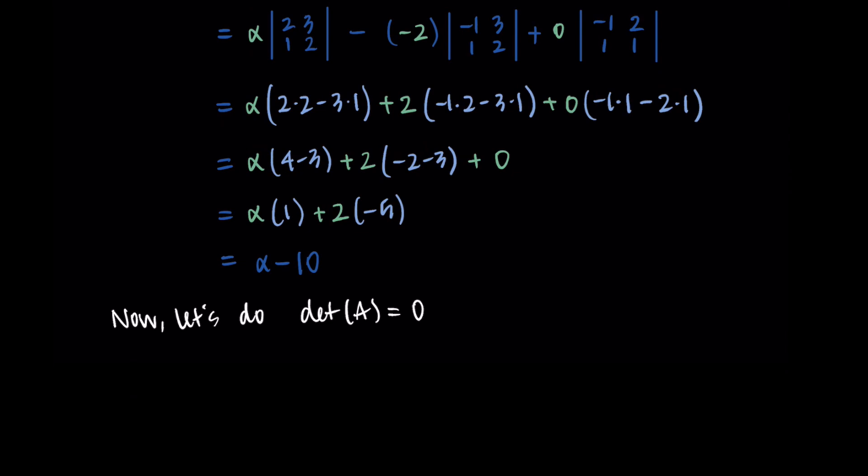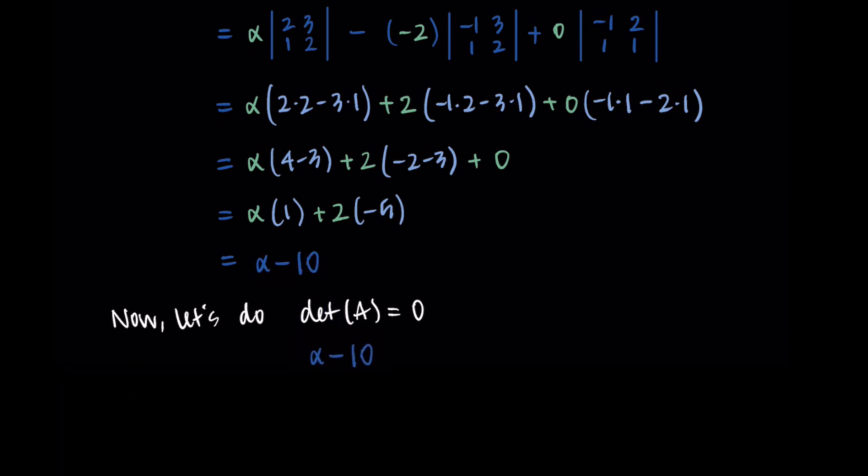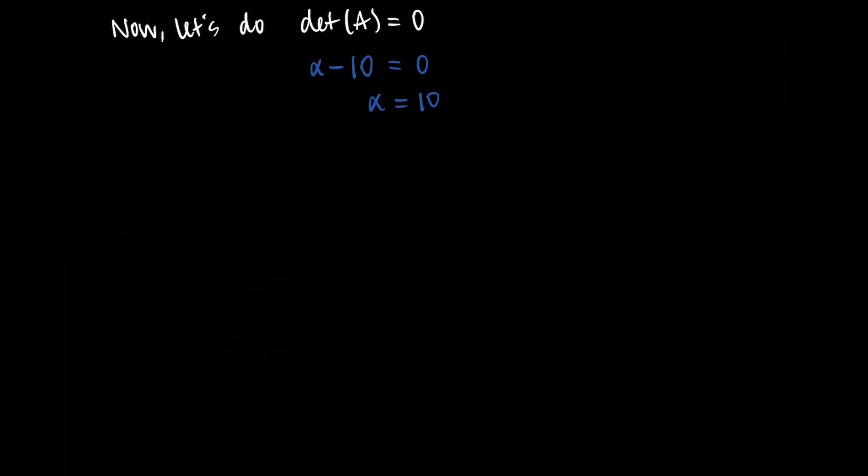So we'll take the determinant equal to zero, which is like setting alpha minus 10 equal to zero. And that's giving us an alpha value of 10. So we can confirm that the matrix A is singular when alpha is equal to 10.